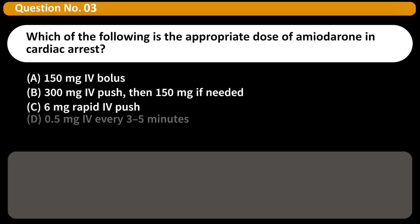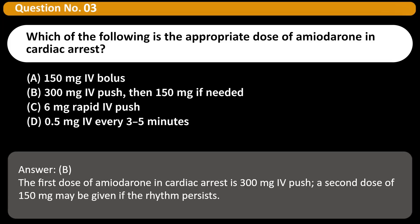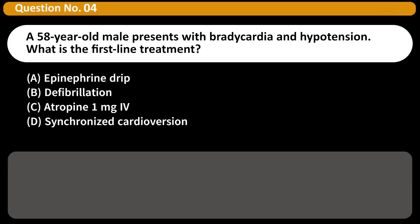Which of the following is the appropriate dose of amiodarone in cardiac arrest? A. 150mg IV bolus. B. 300mg IV push, then 150mg if needed. C. 6mg IV push. D. 0.5mg IV every 3-5 minutes. Answer: B. The first dose of amiodarone in cardiac arrest is 300mg IV push; a second dose of 150mg may be given if the rhythm persists.